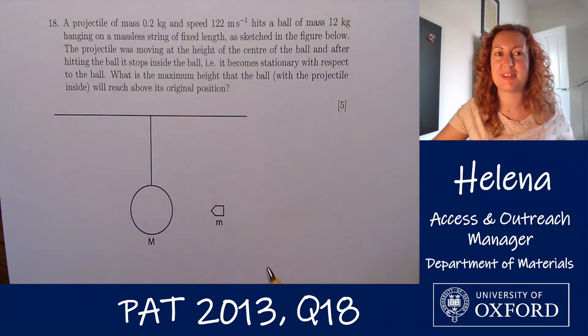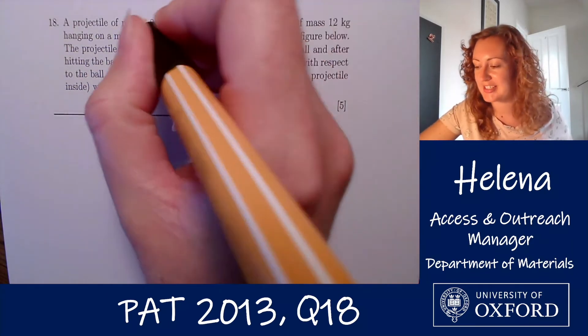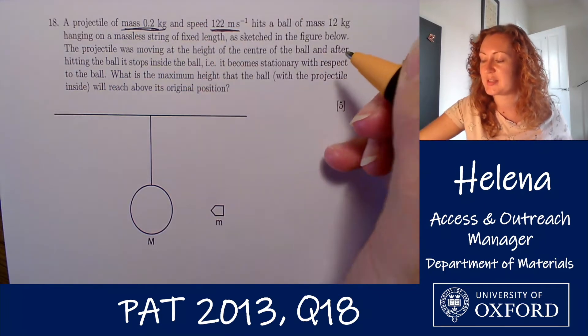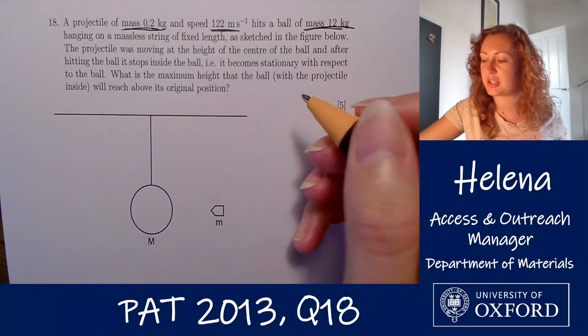So let's have a look at what this question is asking. In this question we have a projectile of mass 0.2 kilograms which is moving at a speed of 122 meters per second towards a ball of mass 12 kilograms which it hits.